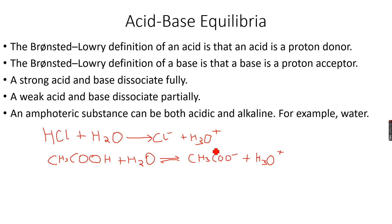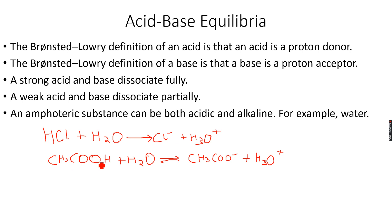The difference between these two reactions is that we have a single arrow, which means the reaction goes to completion, and we have a double arrow, which means it's a reversible reaction. This means that CH3COO- can react with hydronium ions to form back ethanoic acid and water. HCl is a strong acid because it has dissociated fully into ions — the reaction has gone to completion. But CH3COOH is a weak acid because it has only partially dissociated into ions.